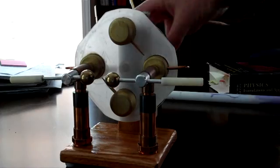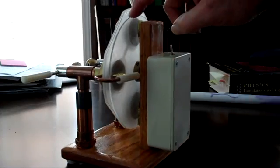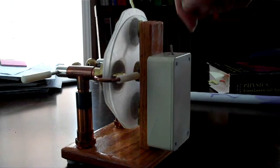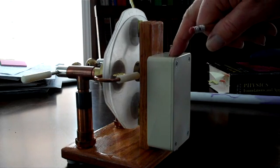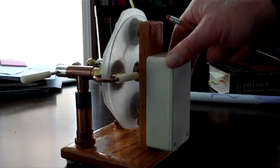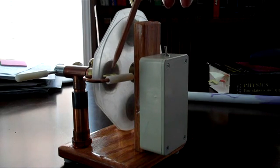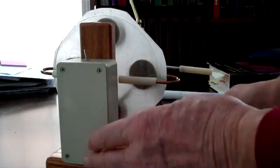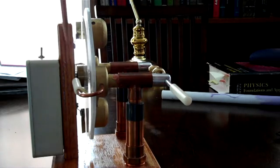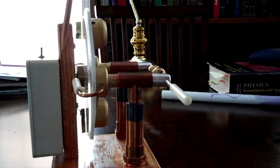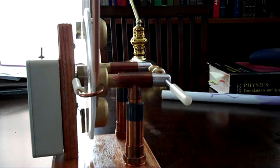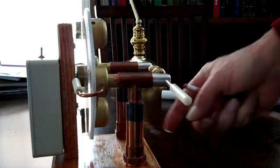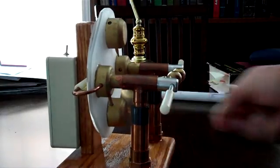This little generator has one rotor right here and it's driven by a motor that's inside of this box. It has a collector brush on this side and a similar one over here on this side. They're made from brass foil and then this copper wire goes around and connects to the other half of the collection brush.